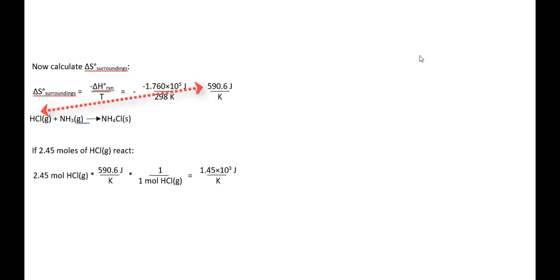And because that delta S surroundings is for this equation, everything is a one-to-one ratio. So for one mole of HCl, the delta H surroundings is 590.6. But for 2.45 moles of HCl, the delta H surroundings is 1.45 times 10 to the third joules per Kelvin.